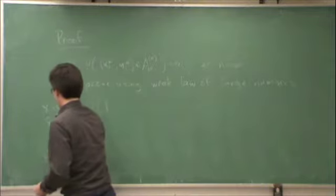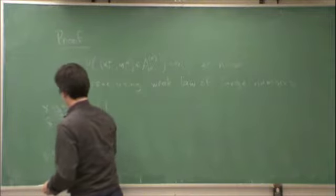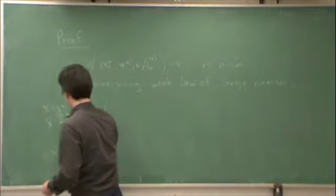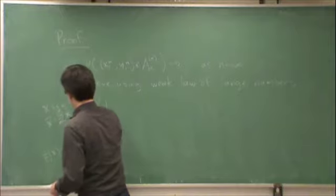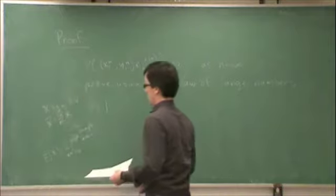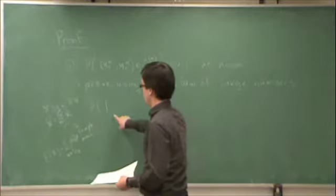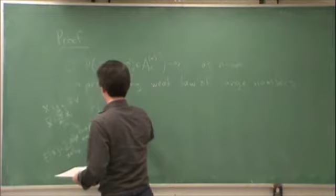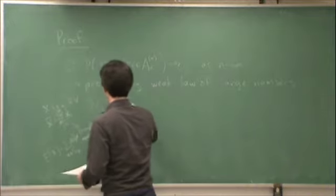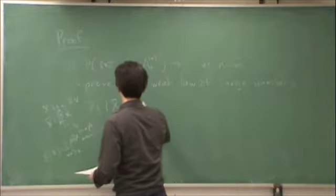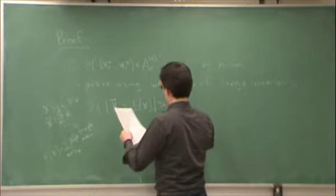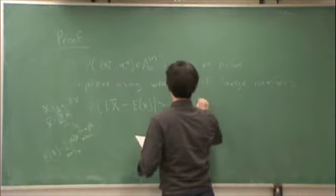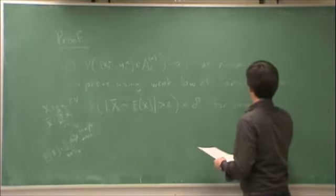The expected value of x — the theoretical mean — is the sum over all x in the sample space of the probability of x times x. The Weak Law of Large Numbers states the probability that the magnitude of the sample mean minus the expectation is greater than some epsilon is less than delta, for any epsilon and delta.